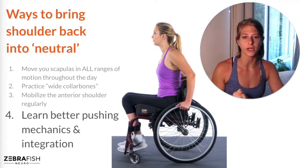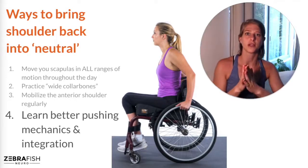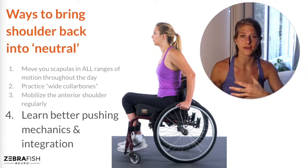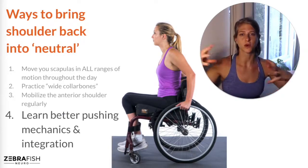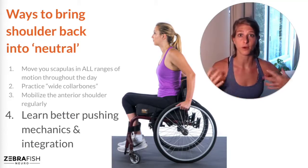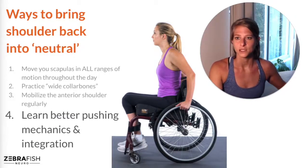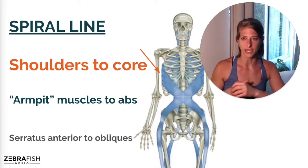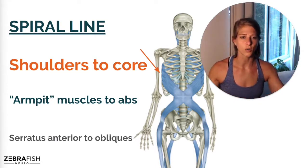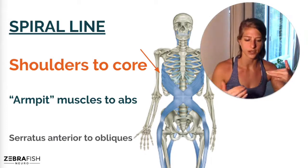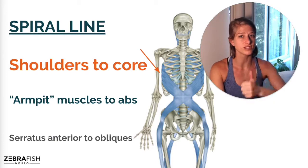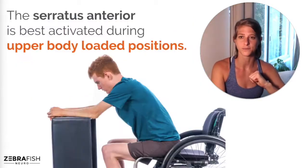The important part about integrating the shoulders and the core is so that the shoulders don't always have to take the brunt of the work — we can distribute the work more among the entire body. That's going to decrease injury in the shoulders and just make you feel more powerful and efficient in general. So let's go back to this spiral line. The shoulders to core, armpit to abs, serratus anterior to obliques — that's how we're going to leverage that serratus anterior down to our abdominals, assuming we now have good positioning and good mechanics of the shoulders.